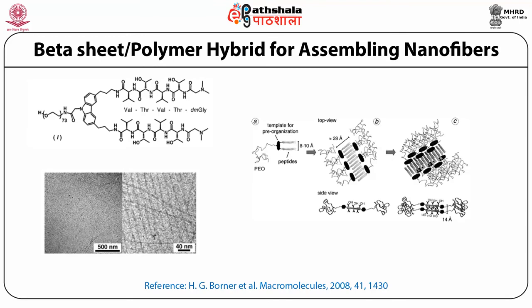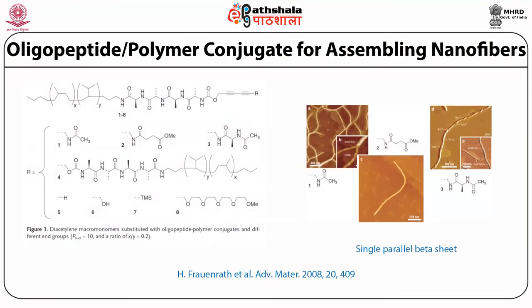Regarding beta sheet and polymer hybrid assemblies for nanostructures: in these designed molecules, one side has a polyethylene oxide chain which is hydrophilic, and the other side has a valine-threonine peptide sequence known to form beta sheet assemblies. TEM images show that they form very nice peptide nanofibers. The proposed assembly model shows that the peptide beta sheet forms an antiparallel arrangement so that each fiber has two stacks coming together, with a hydrophobic peptide core and polyethylene oxide providing solubility.